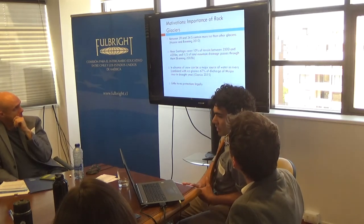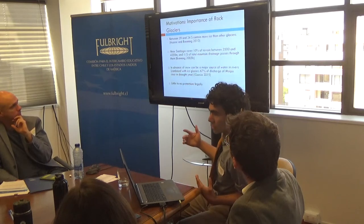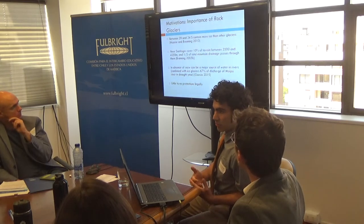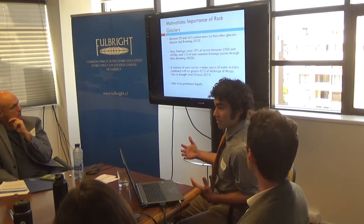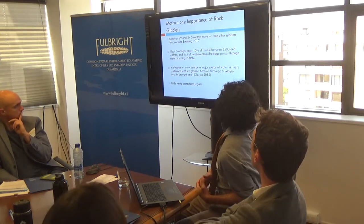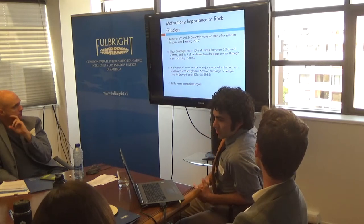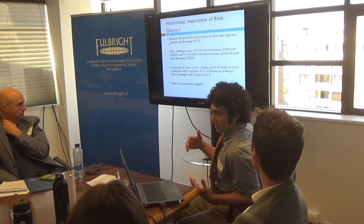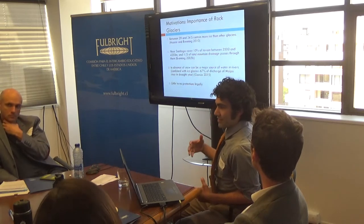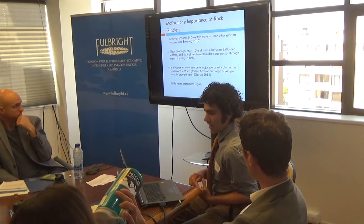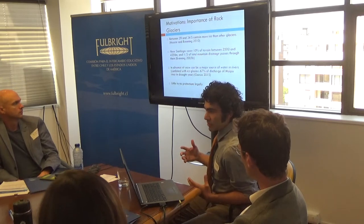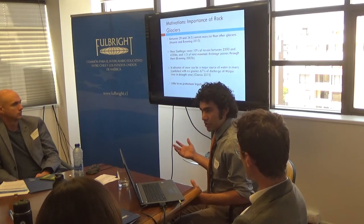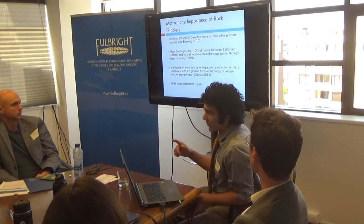So why are they so important? In Chile, specifically between 29 and 34 degrees south — that's the whole central region where most of the population is — there's more ice in rock glaciers than in regular glaciers. They're smaller in size but bigger in extent; there are a lot more of them. Near Santiago, 10% of the terrain between 3,500 and 42,000 meters is covered by rock glaciers, which means they're a fundamental part of the hydrological network. Even if water is not generated there, one fifth of all the drainage passes through them at some point. In the absence of snow, along with traditional glaciers, some studies have shown rock glaciers contributed up to 67-70% of the Maipo's water — and that's the 97% water source for the city of Santiago. And I highlight that there's little to no legal protection for rock glaciers.